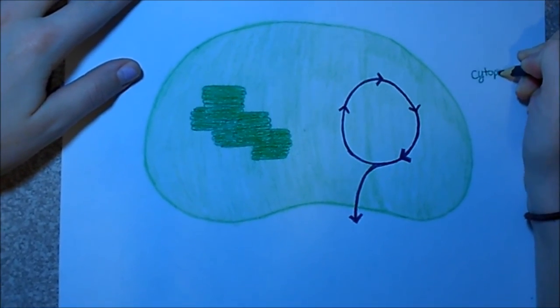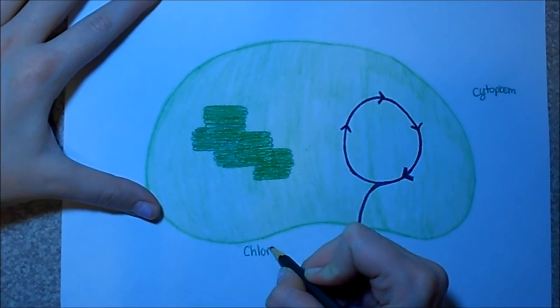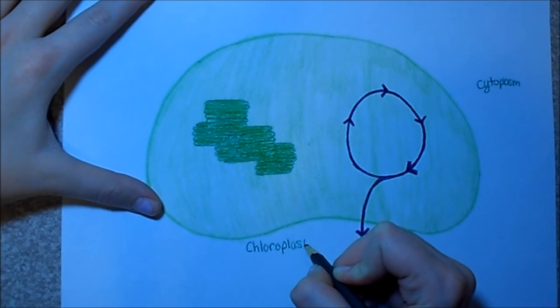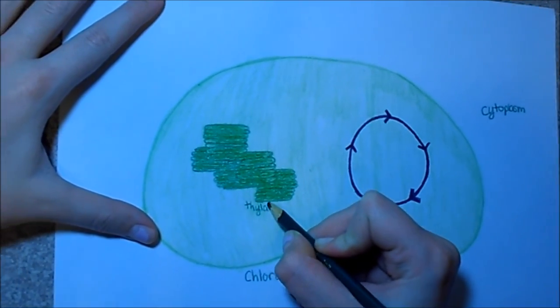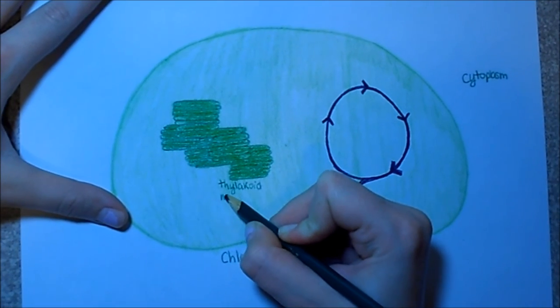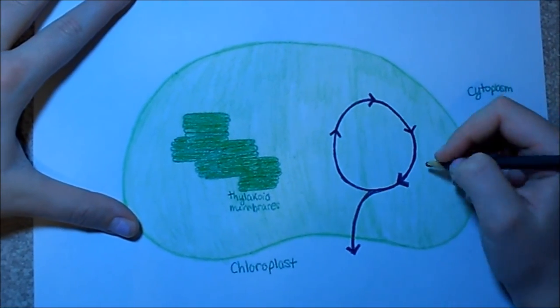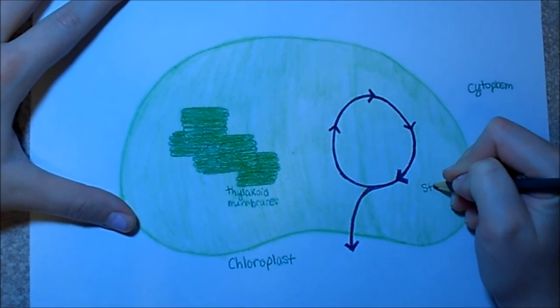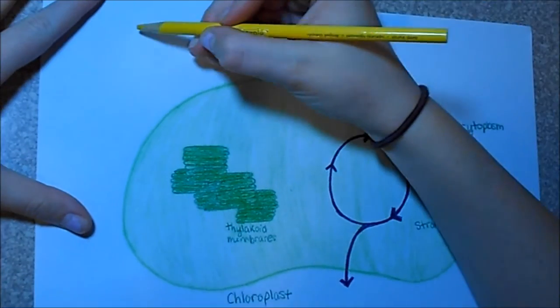Photosynthesis occurs in plants and some protists. In the cytoplasm, inside the cell are chloroplasts, which is where photosynthesis and some ATP synthesis occurs. Inside the chloroplasts are the thylakoid membranes, which look like stacked little green pancakes, which is where the beginning of photosynthesis occurs. The stroma is empty space in the chloroplast where the light-independent reaction occurs.